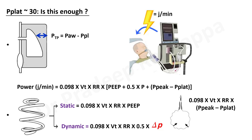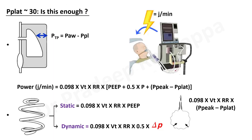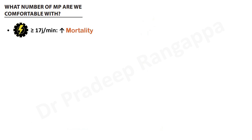Using those formulas you get a value in joules per minute. Studies have shown that 17 joules per minute or less is considered safe for the lungs — anything more than 17 joules per minute is shown to be harmful. A mechanical power above 17 joules per minute shows correlation with increasing mortality.